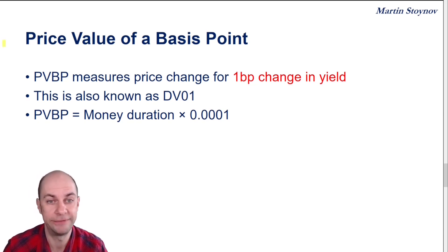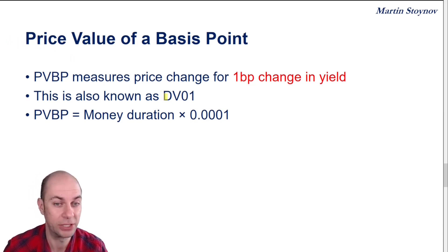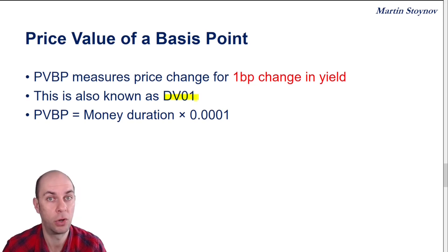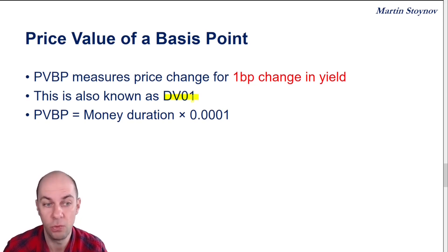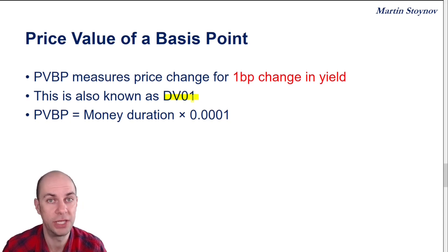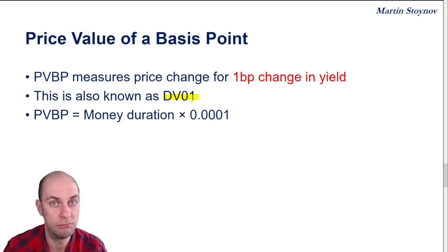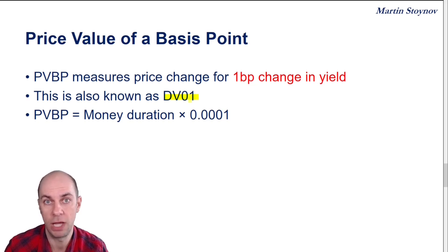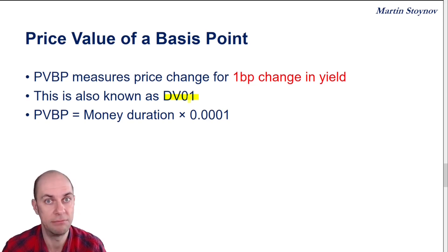PVBP, or the price value of a basis point, is also known as the dollar value of a basis point, or the DV01. It is a measure related to money duration, because both are measured in monetary terms.